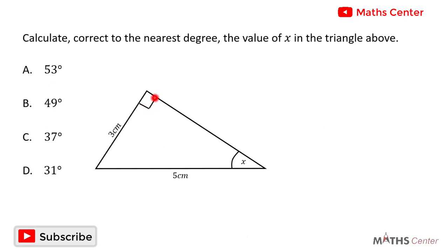This interior angle is 90 degrees. It means that the triangle we have here is a right angled triangle. If it is a right angled triangle, then we can use one of the trigonometric ratios to find the value of x.